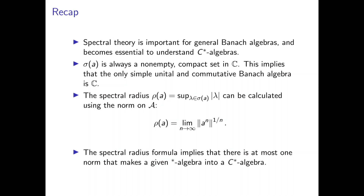Once we have all of this, we can go on to cover the Gelfand theory of general Banach star algebras, which is quite exciting. Once we get into the Gelfand theory for commutative Banach star algebras, we get into interesting aspects of C*-algebra theory that we'll use again and again to prove more subtle results, until we get to the non-commutative Gelfand-Naimark theorem — which is sort of the culmination of the course. But for now, see you later and have a good one.